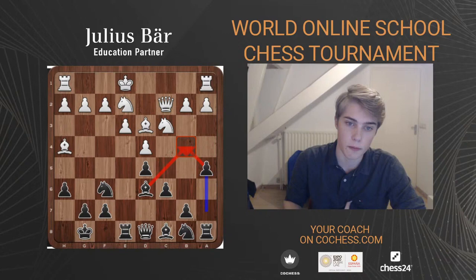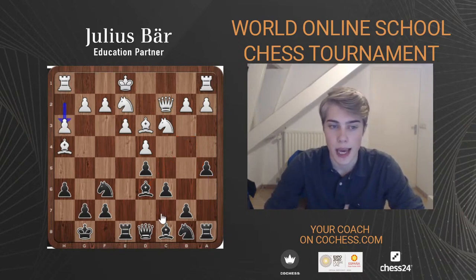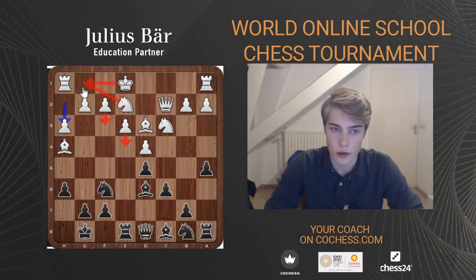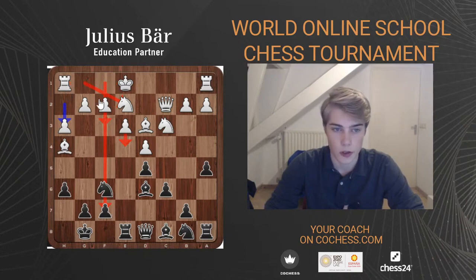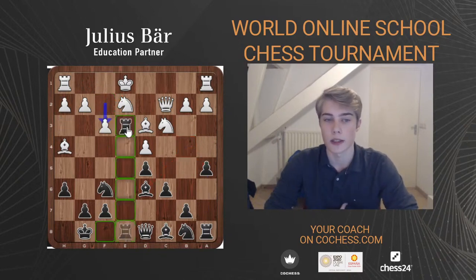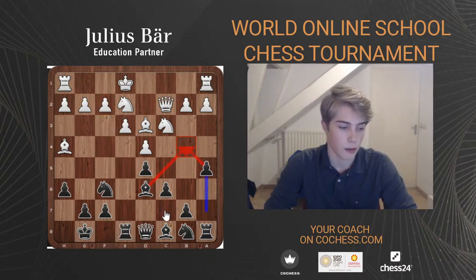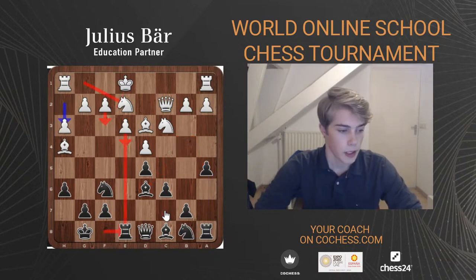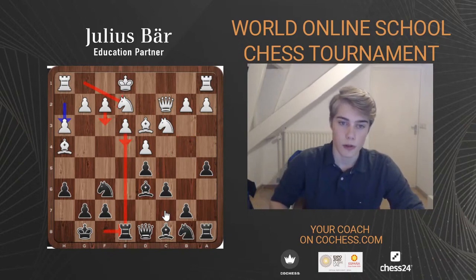Instead, White should probably play h3 — preventing Bxh2 and stopping any Bg4 ideas. One idea of putting the knight to e2 is that White might eventually play f3 and then e4, trying to grab the center and open the f-file. But with our rook on e8 it's difficult, because if White plays f3 we can simply take the pawn on e3. So our rook placement on e8 prevents this plan.